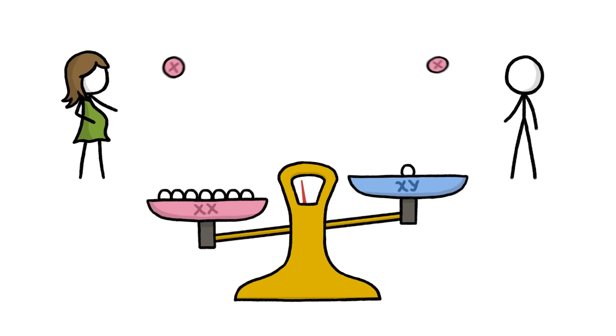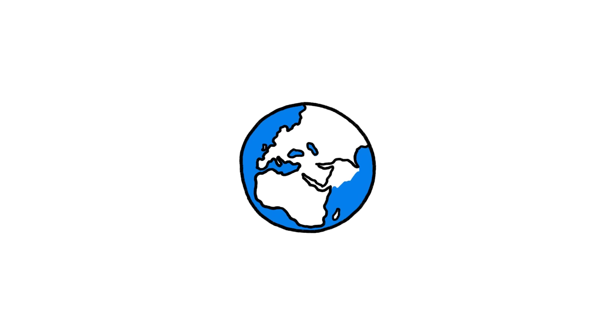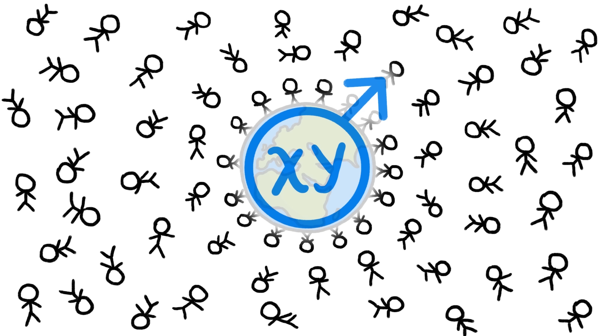For every 100 girls born, the world gains about 106 baby boys. Currently, that skewed sex ratio comes out to roughly 10 million more baby boys than girls born worldwide each year.